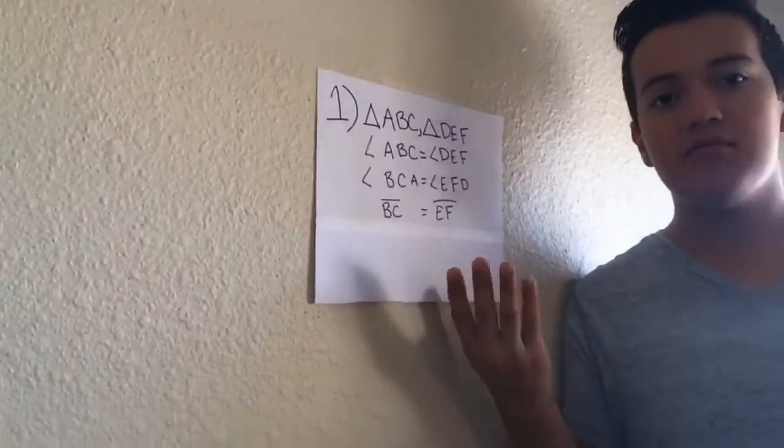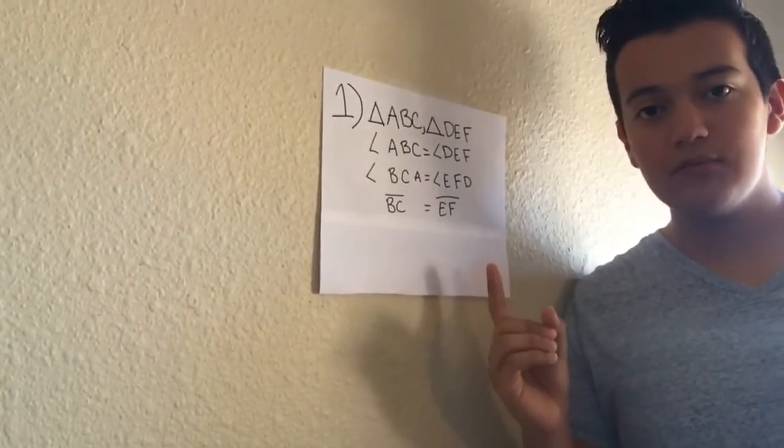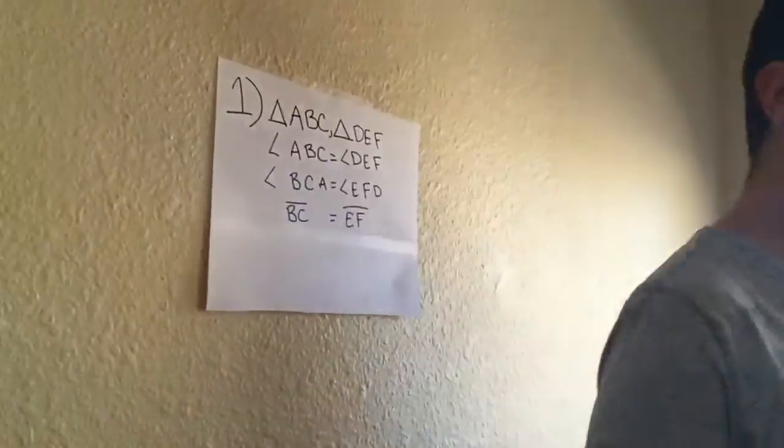So step one is the given. In every one of Euclid's propositions, step one will always be the given of the proposition. So let's go on to step two, three, and four.